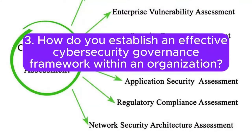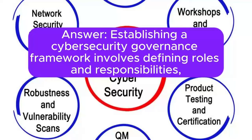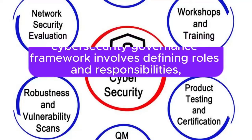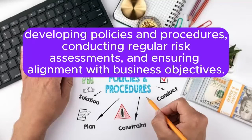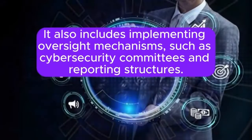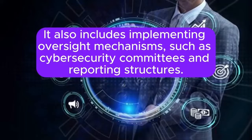Question 3: How do you establish an effective cybersecurity governance framework within an organization? Answer: Establishing a cybersecurity governance framework involves defining roles and responsibilities, developing policies and procedures, conducting regular risk assessments, and ensuring alignment with business objectives. It also includes implementing oversight mechanisms, such as cybersecurity committees and reporting structures.